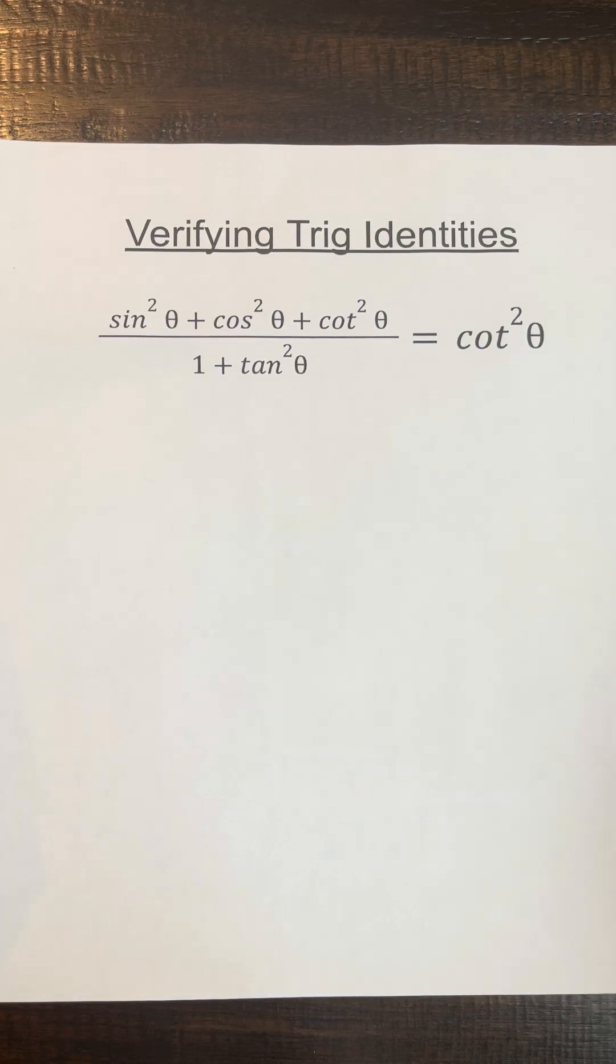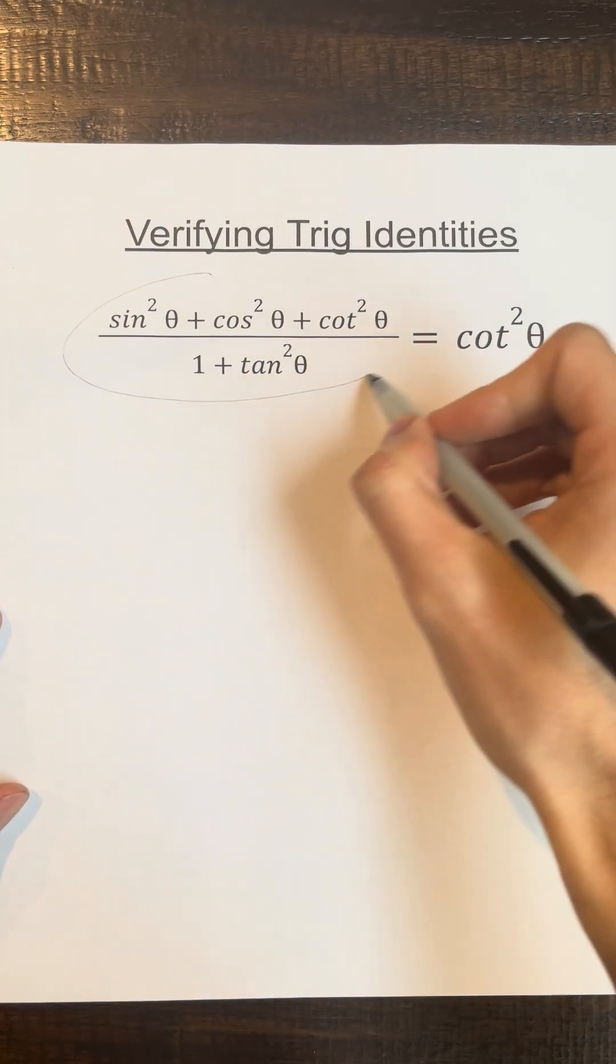If you're verifying trigonometric identities, simplify the more complicated side first.